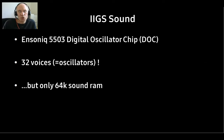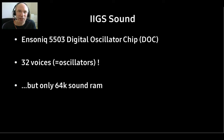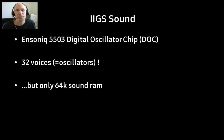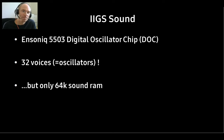Let's talk about the IIgs sound hardware. Unlike the graphics chip in the IIgs, the sound hardware is not a total disaster. The sound chip is the Ensoniq DOC, and it's the successor to the famous Commodore 64 SID chip. It has 32 voices, which is fantastic, but only 64 kilobytes of wavetable sound RAM from which to play. Not great, but still okay.